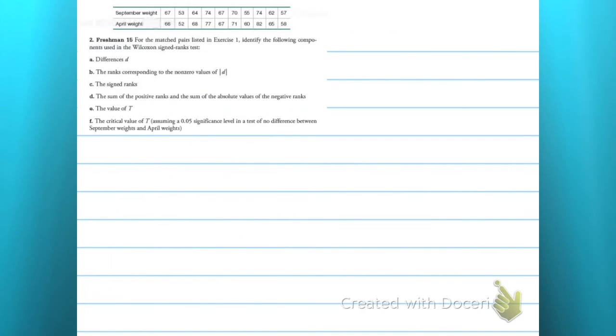Alright, so we want to know whether or not the freshman 15 is real. So they have a pair of matched pairs. We want to use a signed-rank test. So we're gonna assume that the medians are the same, that the median weight in September is the same as the median weight in April. And our alternative is that the median weights are different.